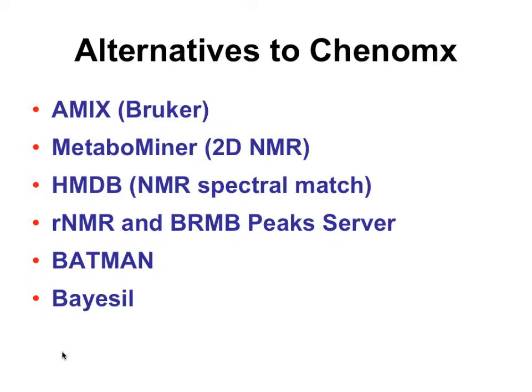There are other alternatives and I'm going to race through a few of them. I've already mentioned TopSpin Amix, which is done by Bruker. It's a commercial package — we can't afford it, so we're not using it. Then there's MetaboMiner. That's freeware that Jeff actually wrote — your TA. There are also tools available through the Human Metabolome Database and tools available through Wisconsin-Madison's BioMagResBank.